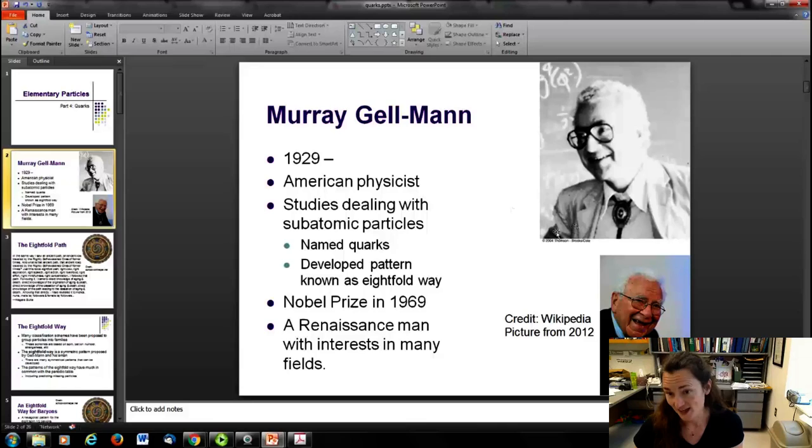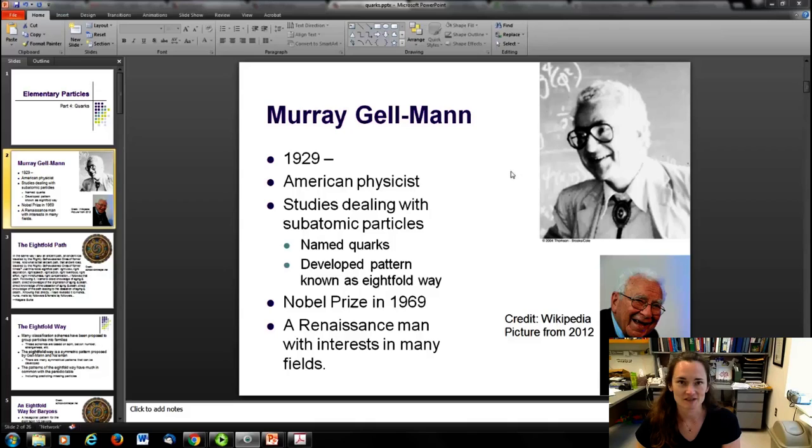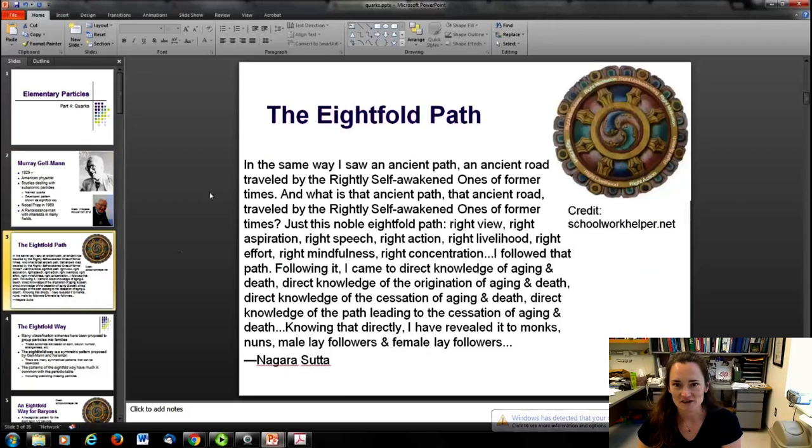This guy is not dead yet. He's pretty old, but he's definitely not dead. This is a picture of him from 2012 at a scientific meeting. He's an American physicist, and he did a lot of studies dealing with subatomic particles. He came up with and named the quark, and he developed a pattern known as the Eightfold Way, which was a precursor to the Standard Model. He won the Nobel Prize in 1969, and he was a Renaissance man with interest in many different fields and a great appreciation for literature.